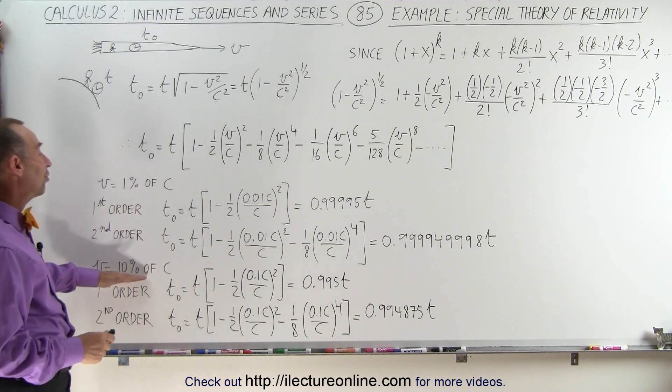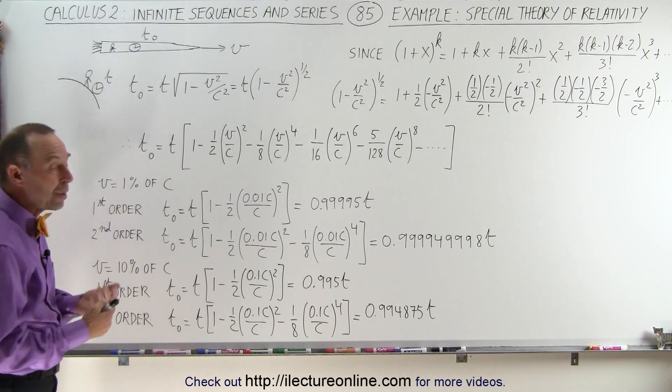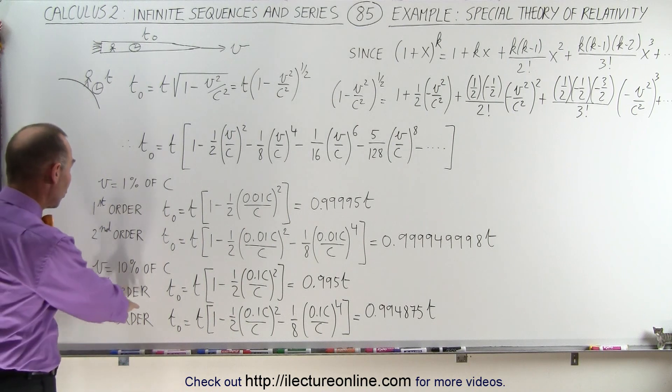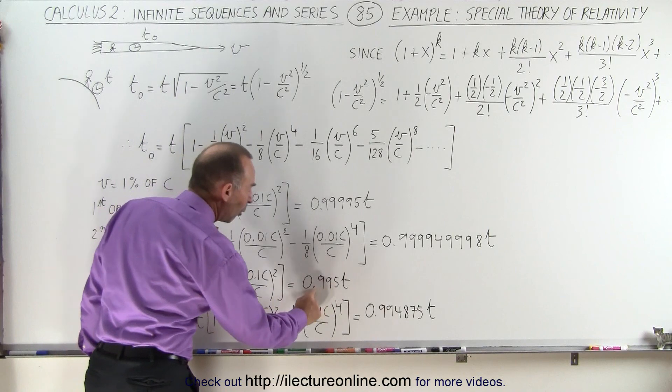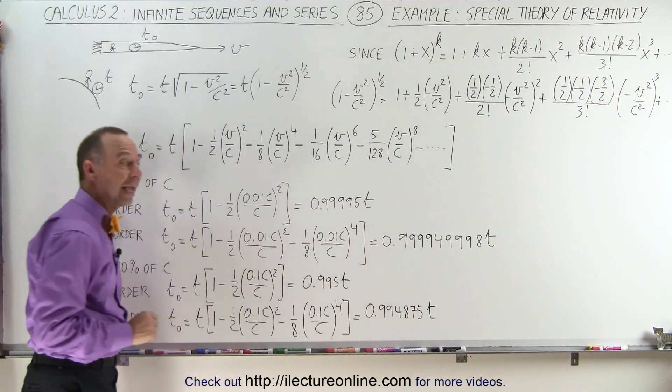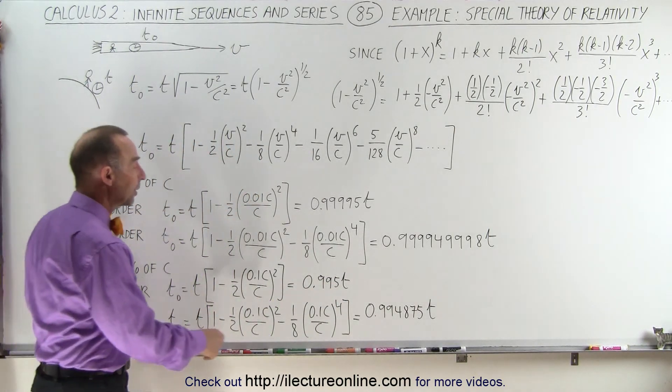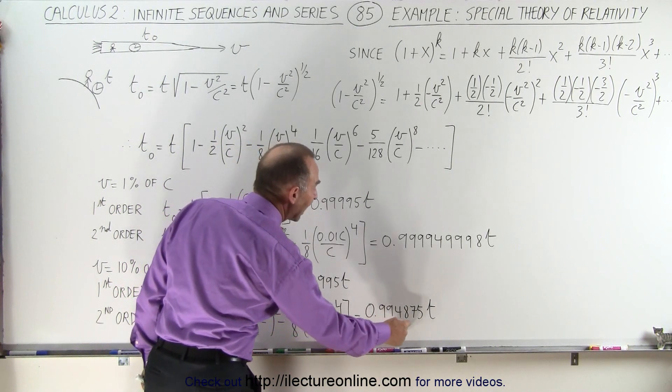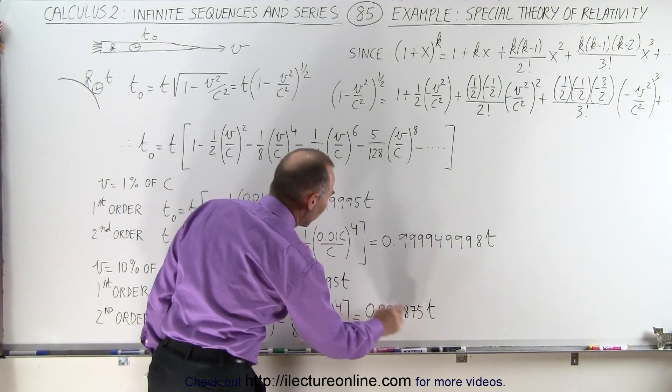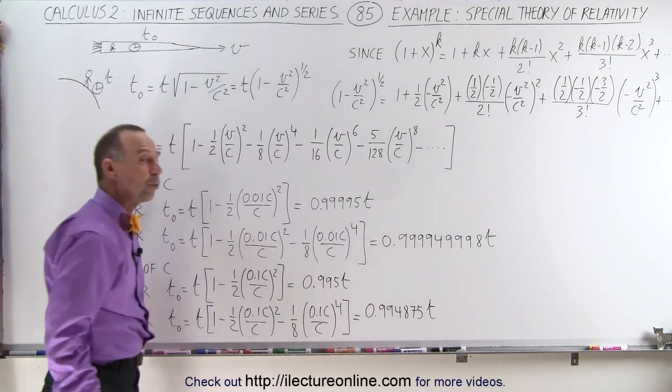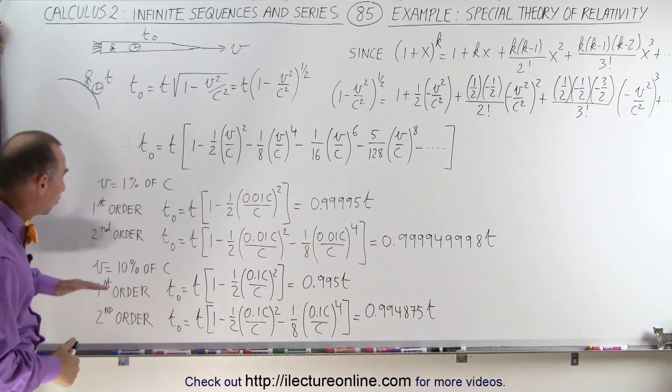Now if it's 10 percent the speed of light, notice then we may want to go to a second order. The first order will give us the equation t₀ equals t times 0.995. And if we go in additional order, then it becomes 0.994875. So you can see there's a significant difference compared to only using the first order when the speed goes up to 10 percent the speed of light.